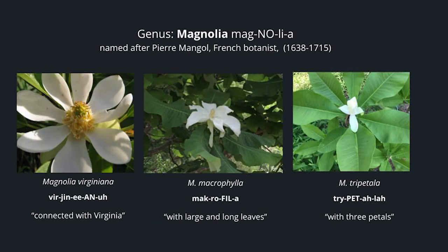The genus Magnolia is named after Pierre Magnol, a French botanist. A magnolia connected with Virginia is Magnolia virginiana. A magnolia with large and long leaves is Magnolia macrophylla — the leaves on these can be up to 32 inches long, giving you an idea of how gigantic the flower is. But the leaf size is the more distinctive identifier, so that's why they went with that. And finally, Magnolia tripetala means with three petals — though these typically have six to nine petals. This name actually refers to the sepals, the portion of the flower covering the buds before they open, which are in threes.